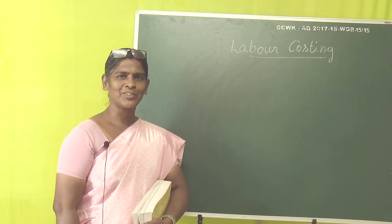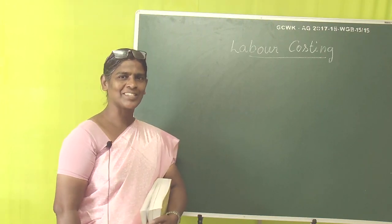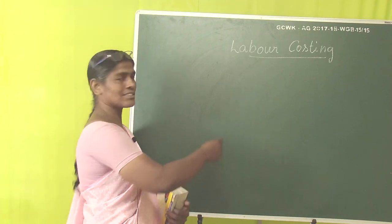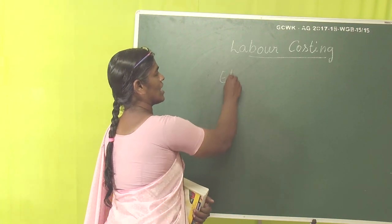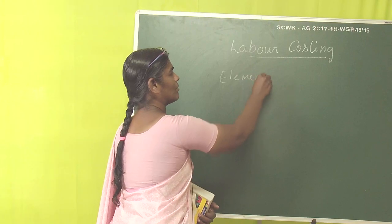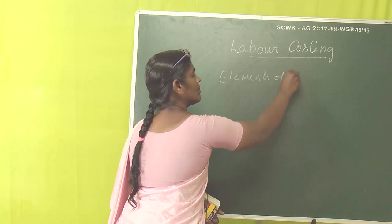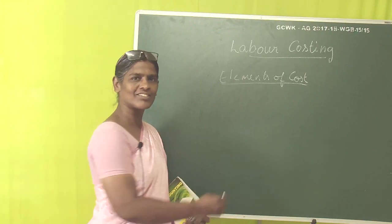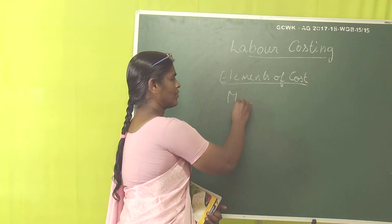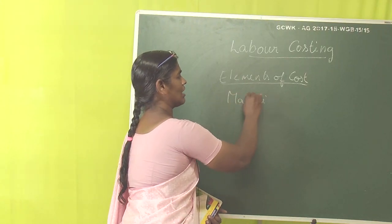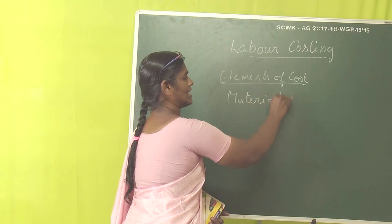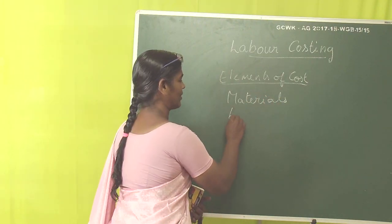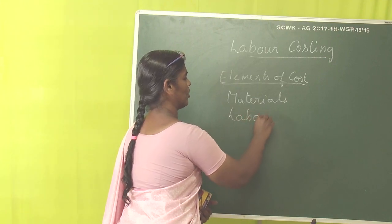Good morning students. Today we are going to learn something under labor costing. We know in cost sheet, or in the elements of cost, the major element is materials. The first major element is materials and the second major element is labor. So today we are going to study about labor.